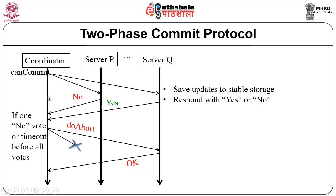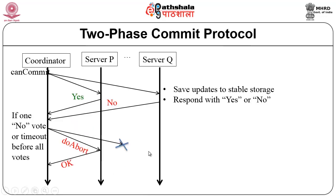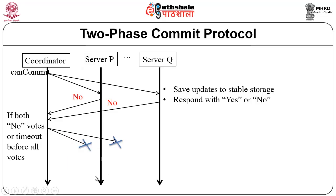In case one participant says no and the other says yes, the coordinator takes a 'do abort' decision. If server P said no, there is no need to tell P to abort — only server Q, who was ready to commit, gets a 'do abort' message. Similarly, if server Q said no, only server P gets a 'do abort' response. In case both say no, the coordinator just writes the decision in stable storage and does not send any message to anybody.